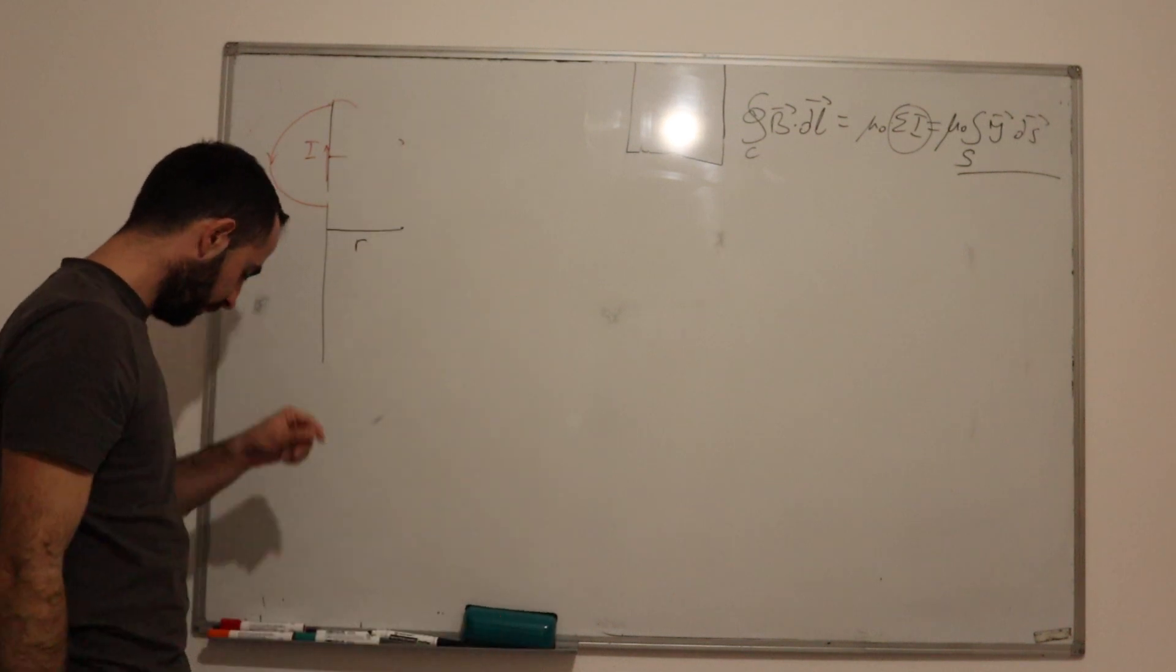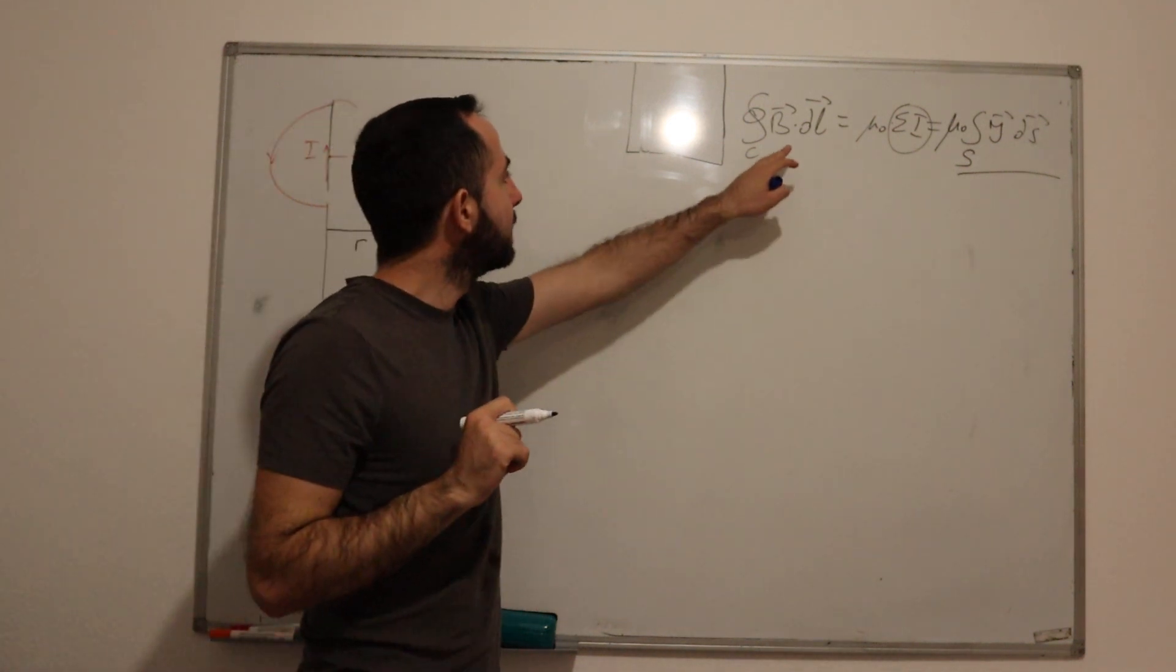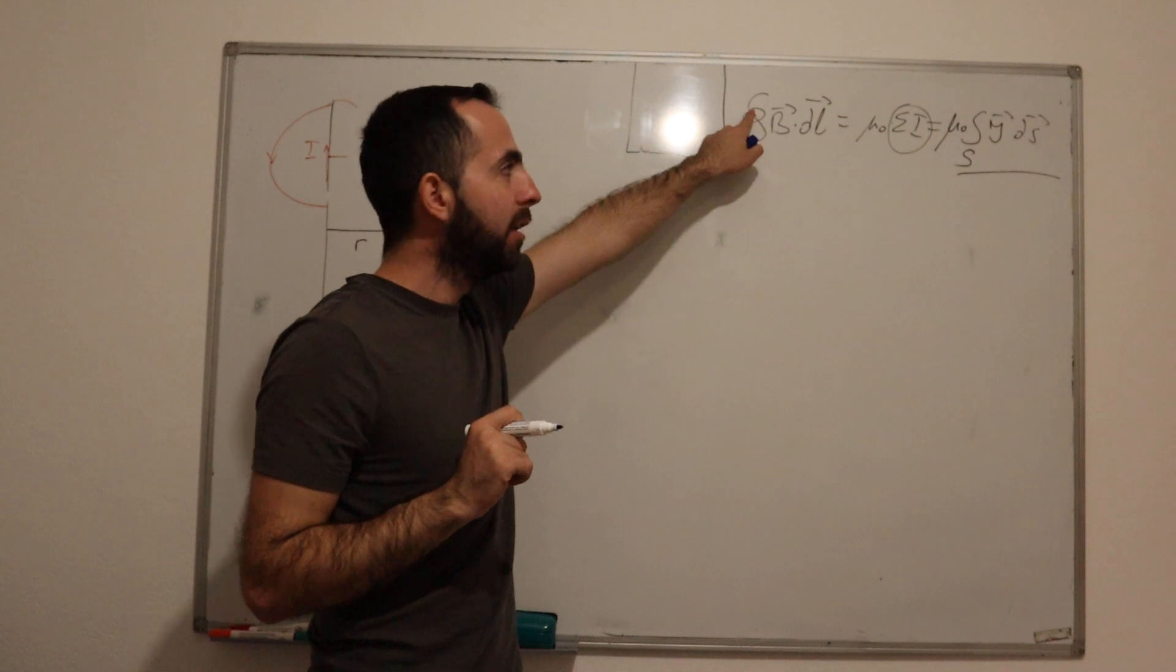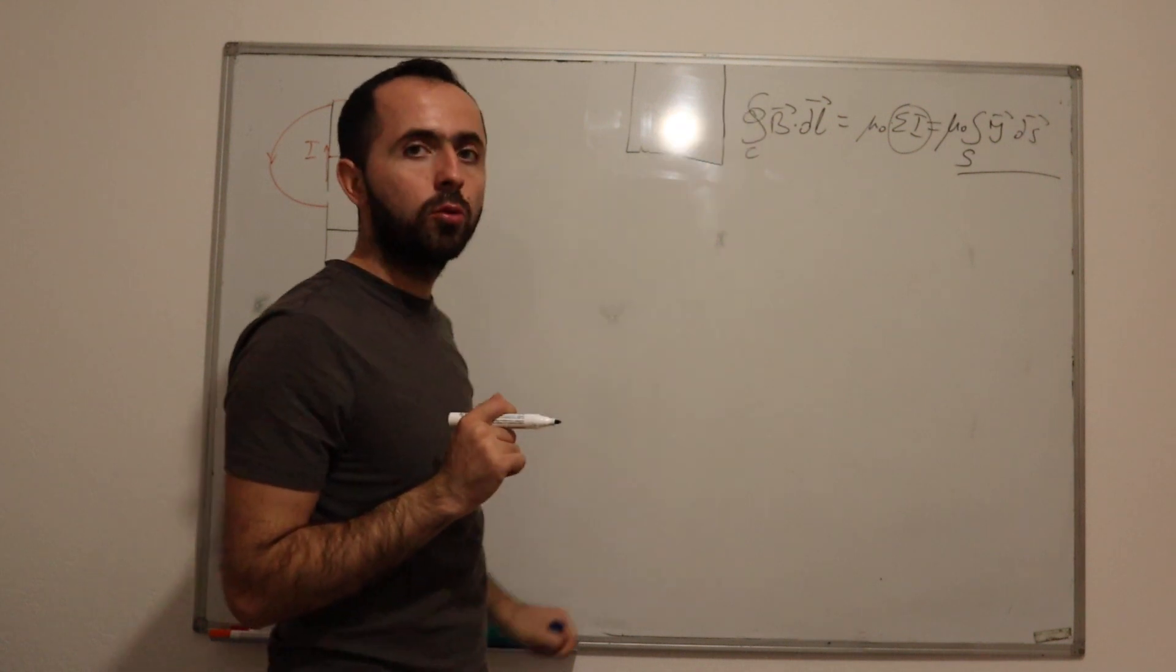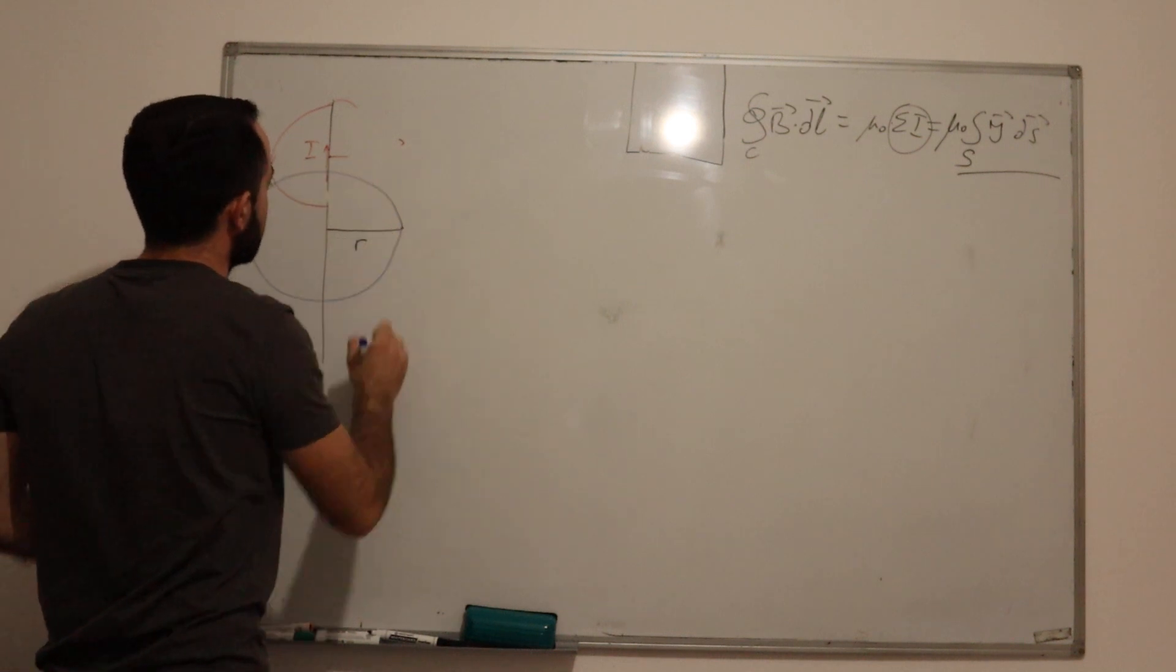So, what will we do? We will take the formula that says you must firstly choose the closed contour. Our closed contour is, we will choose a circle.